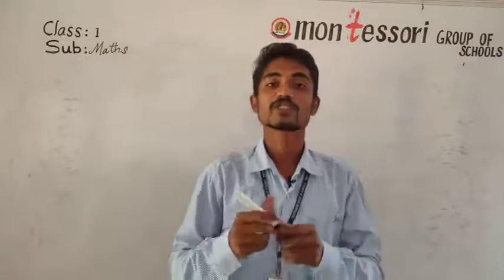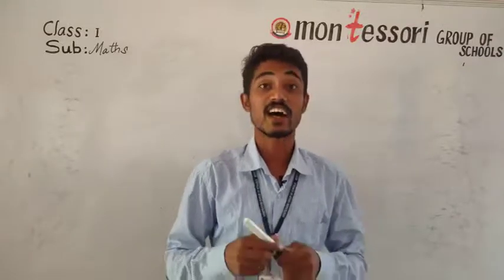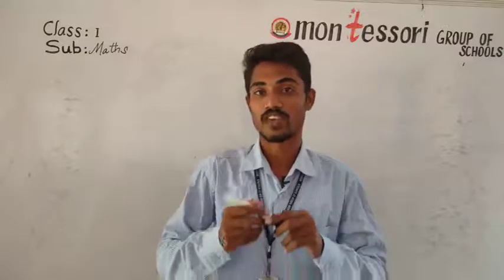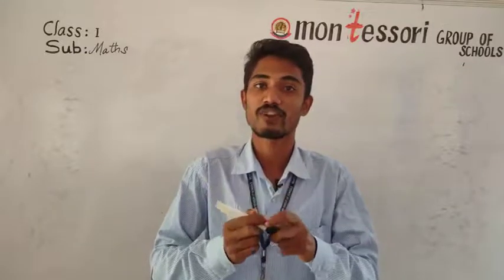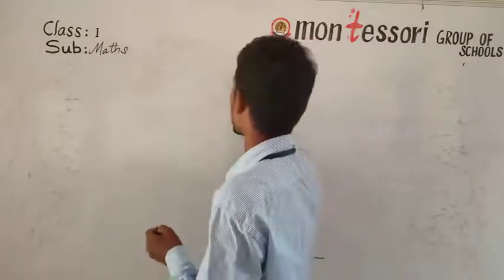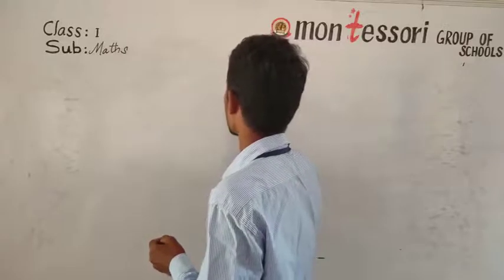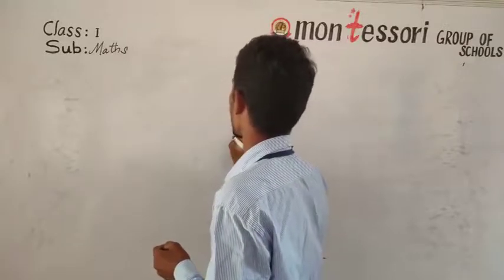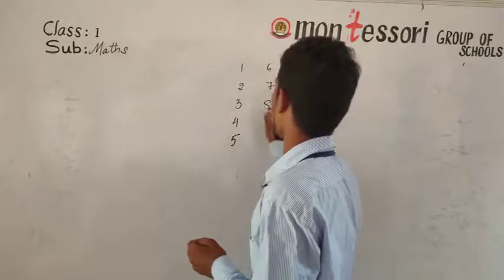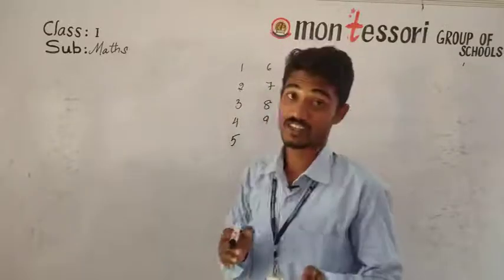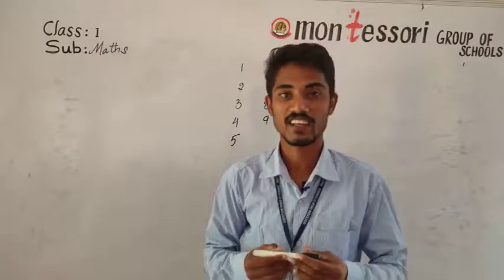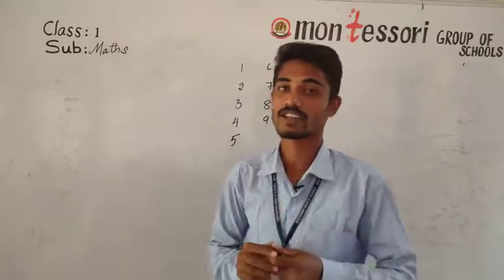In the last topic we discussed numbers from 0 to 9. We have excluded 0 but we can count from 1 to 9. So all of you read with me: 1, 2, 3, 4, 5, 6, 7, 8, 9. These are the numbers we already discussed in the last class. I hope all of you have learned those numbers.